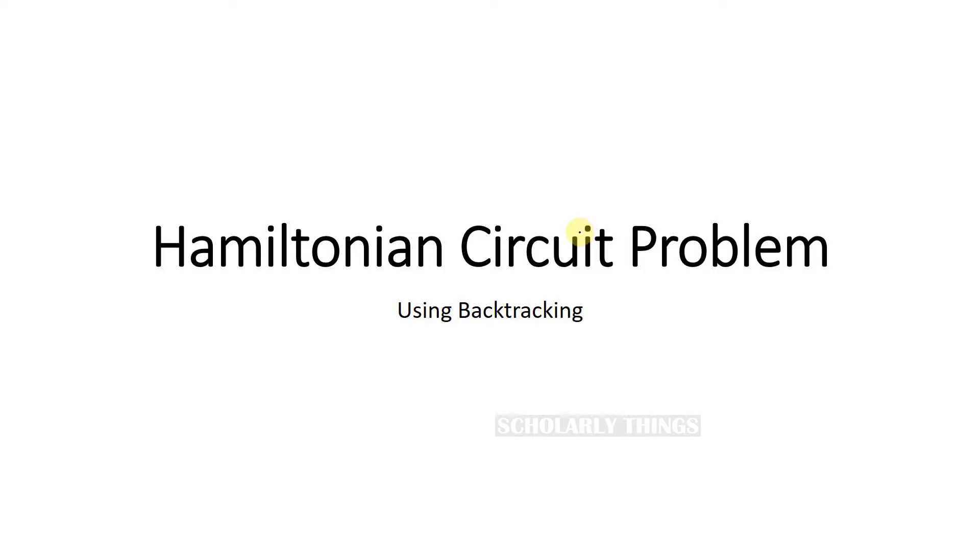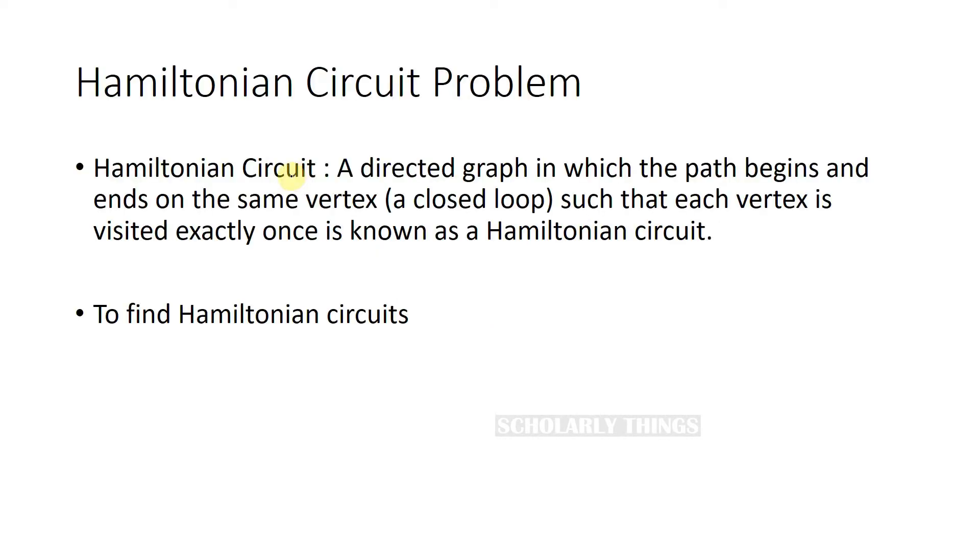Hamiltonian circuit problem using backtracking. A Hamiltonian circuit is a directed graph in which the path begins and ends at the same vertex such that each vertex is visited exactly once. This problem requires us to find such Hamiltonian circuits if available in the given graph.